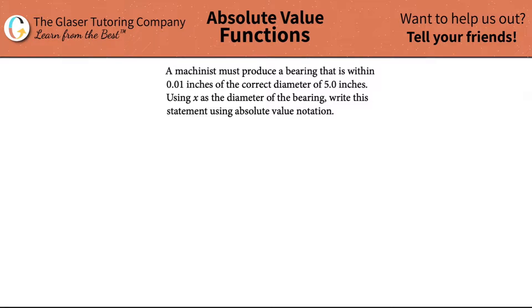A machinist must produce a bearing that is within 0.01 inches of a correct diameter of 5.0 inches, and using x as the diameter of the bearing, write this statement using absolute value notation.